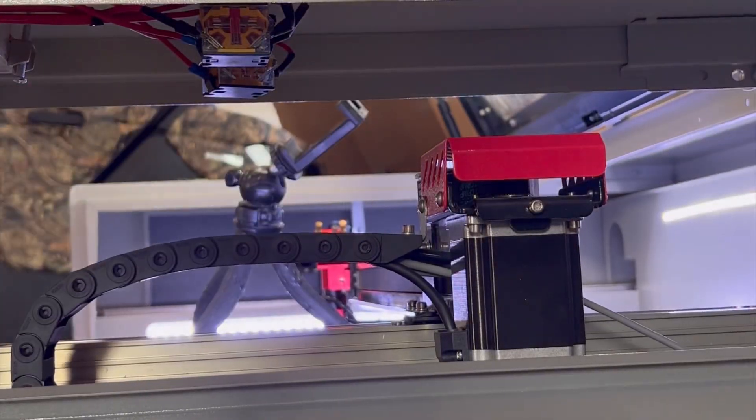I'm on the right hand side of the machine now. The next step is to remove two screws that hold this drag chain assembly in place.